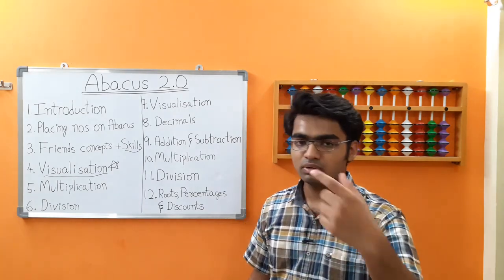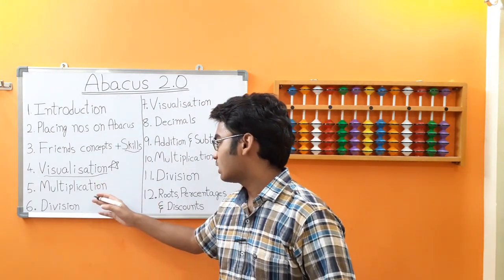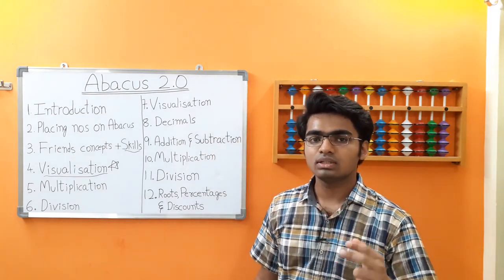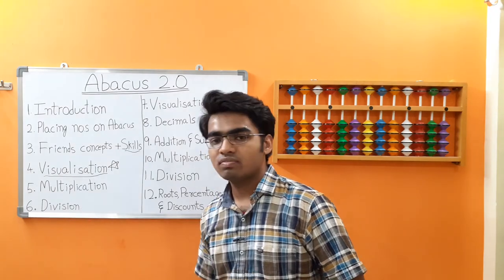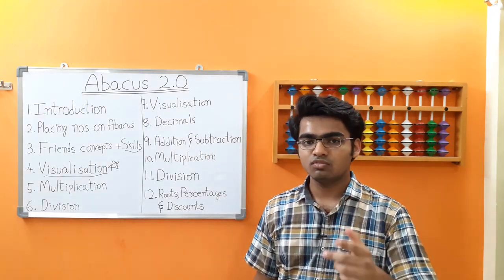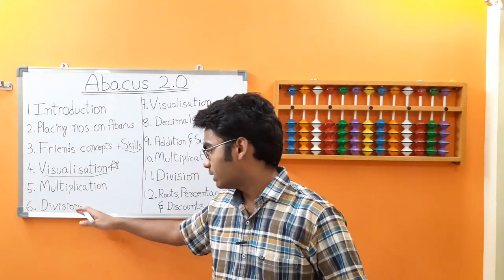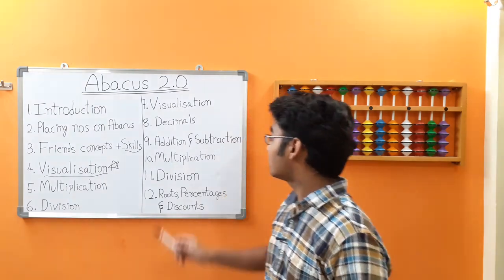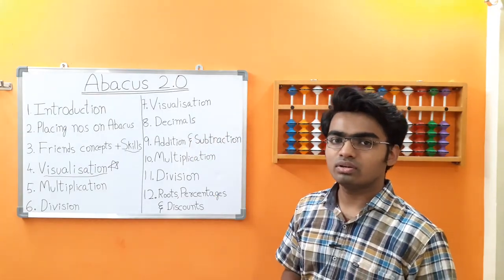As part of multiplication and division, we are going to introduce multiplication and division concepts. We will solve sums like two-digit into one-digit, two-digit into two-digit, and three-digit into one-digit. As part of division, we have three-digit by one-digit, three-digit by two-digit, and four-digit by one-digit. You'll see more details in our future videos.